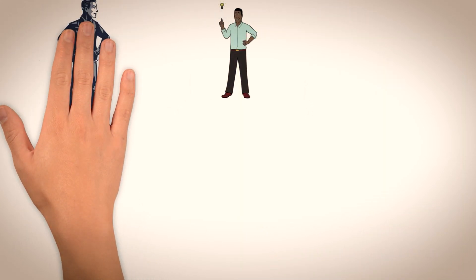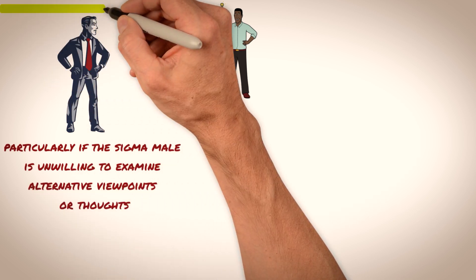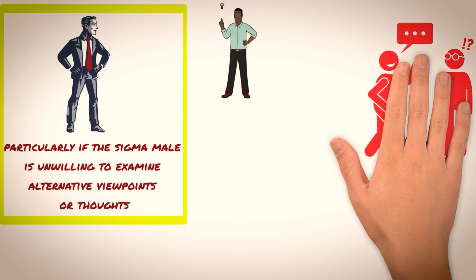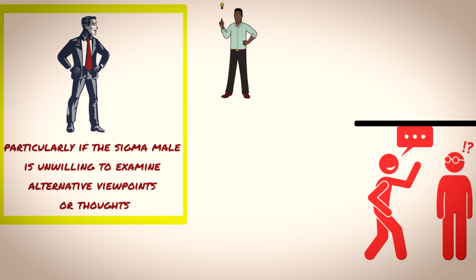This confidence can sometimes be misinterpreted as arrogance or stubbornness, especially if the Sigma male is not open to considering different perspectives or ideas. However, it is important to recognize that this behavior is not a reflection of a lack of openness, but rather a reflection of their strong sense of self and beliefs.